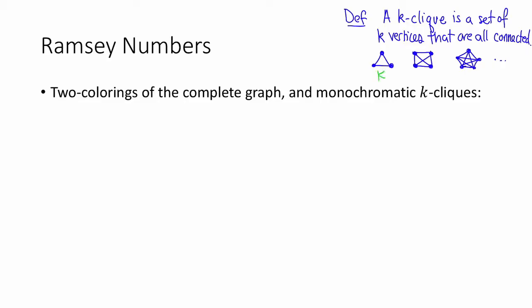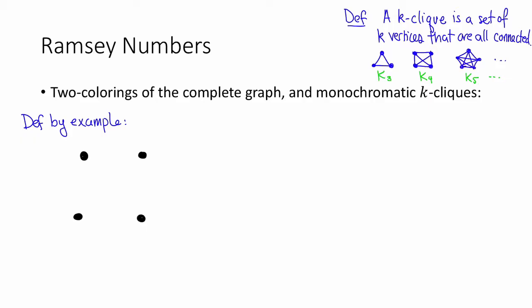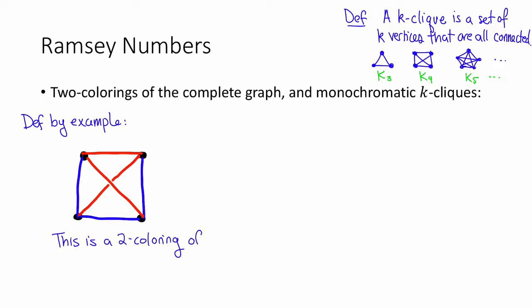I'm going to use the notation K sub n to denote the clique on n vertices. So this is K sub 3, this is K4, this is K5, and so on. Next, what is a two-coloring of the complete graph? Here's a definition by example. Let's say we're looking at the complete graph on four vertices. A two-coloring of the complete graph means that I'm just going to color every edge one of two colors, let's say either red or blue. So maybe I'll color this edge blue, this edge blue, this edge blue, and the remaining edges will be red. So now I've colored every single edge either red or blue.